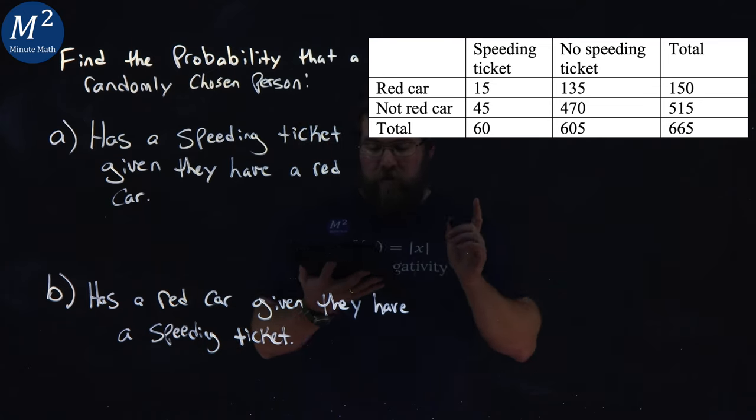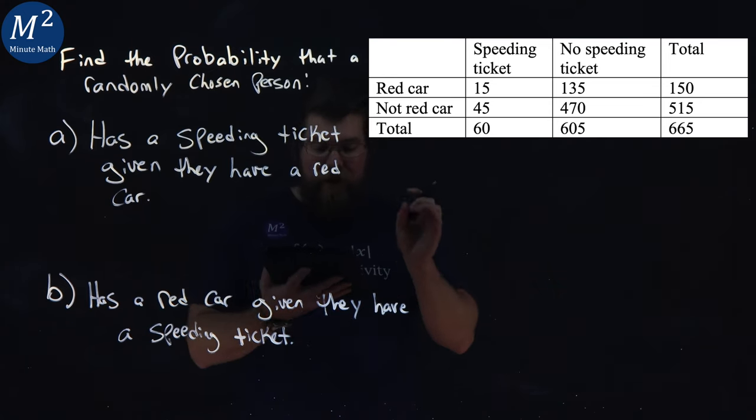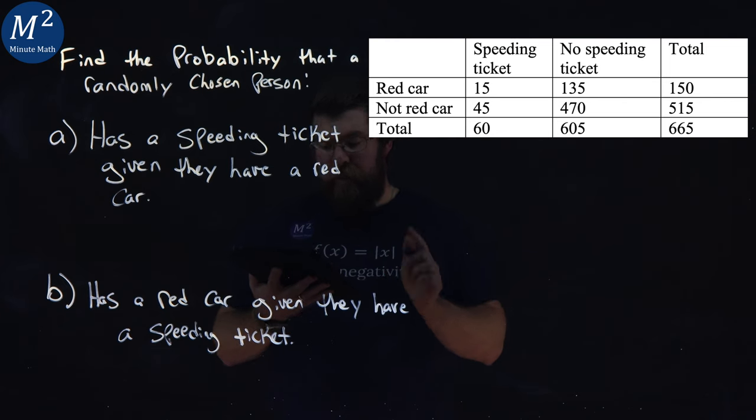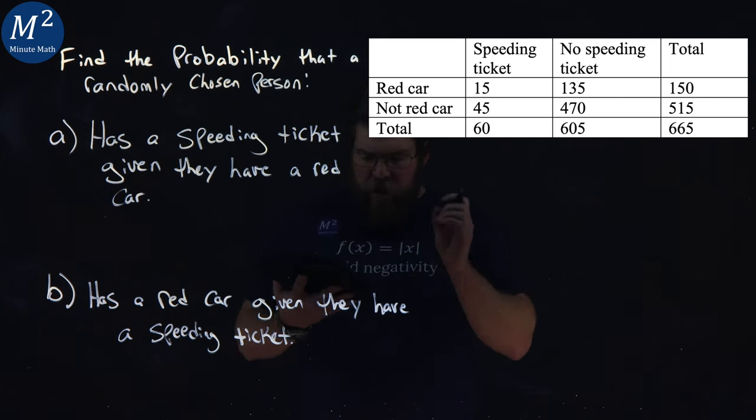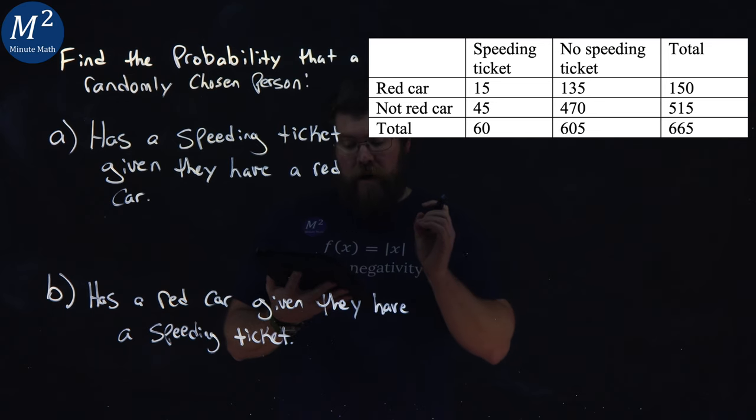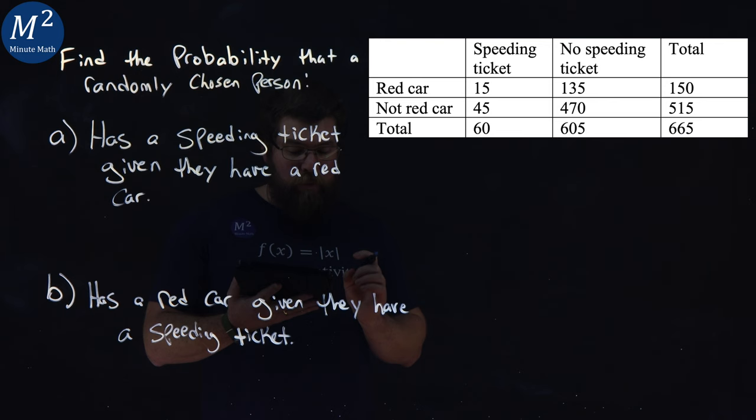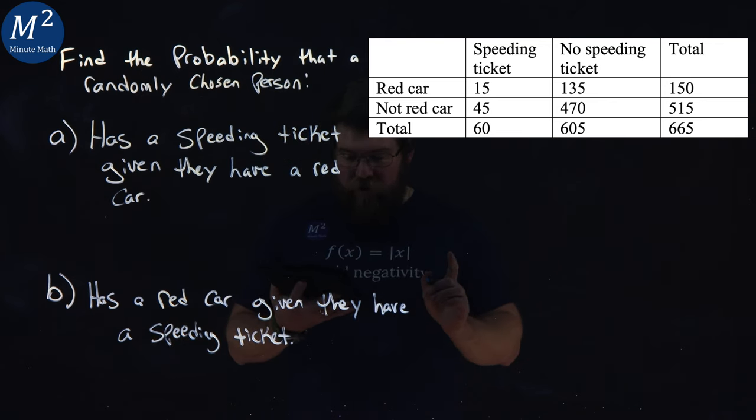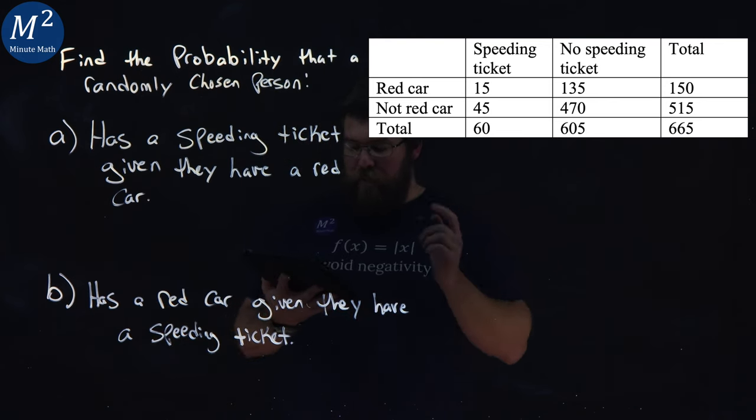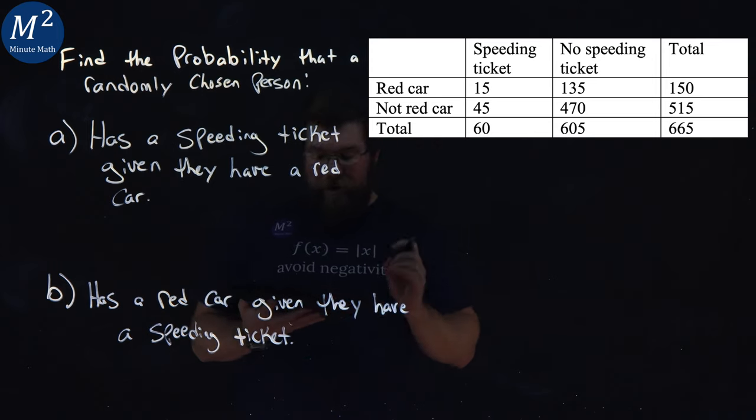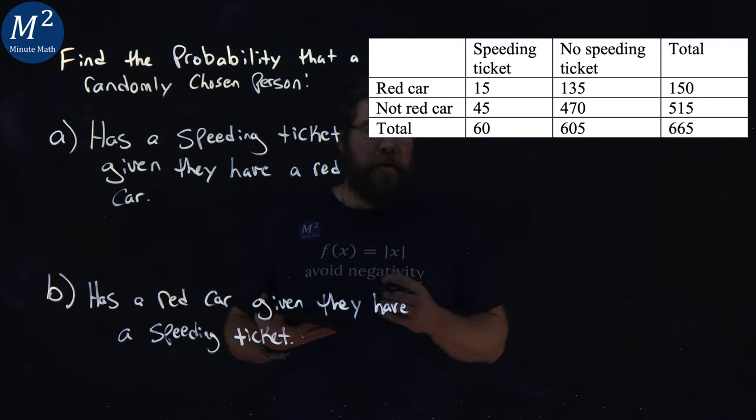The table shows the number of survey subjects who have received and not received a speeding ticket in the last year and the color of their car. Find the probability that a randomly chosen person: A) has a speeding ticket given they have a red car, and B) has a red car given they have a speeding ticket.